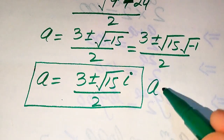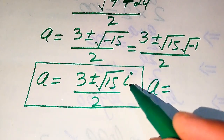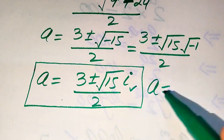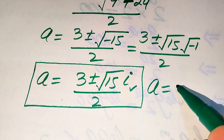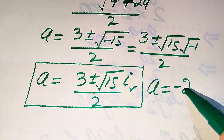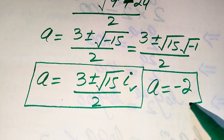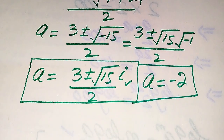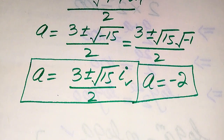So the three roots of the given equation are: the two complex roots (3 plus or minus i times square root of 15) divided by 2, and the real root a equals negative 2. These are the three roots of the given equation and this is our final answer. Thank you so much for watching this video — please subscribe to my channel for more exciting videos.